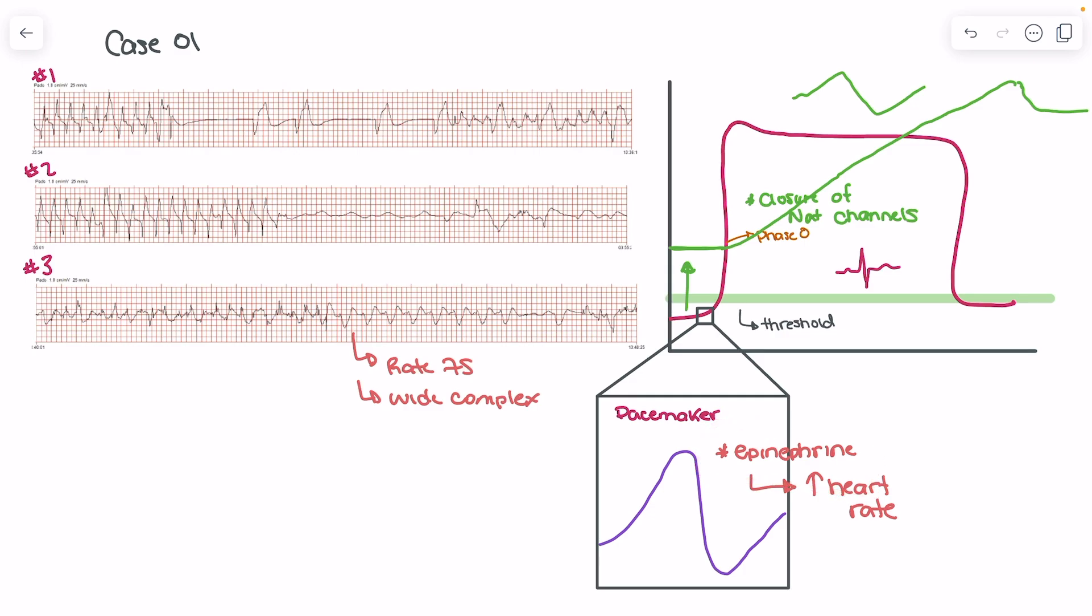So the moral of the story here is that we should be looking at rate, we should be looking at the appearance of the rhythms and rate when we're making decisions around is this shockable or not shockable. And again, the rate being less than 100 here is relevant because that makes it not a ventricular tachycardia and makes it not shockable.